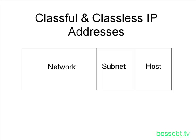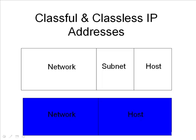Prior to this, we talked about IP addresses only having two portions: the network and the host. When there is no subnetting, when a router receives a packet with an IP address without subnetting, it would only pay attention to the network portion.